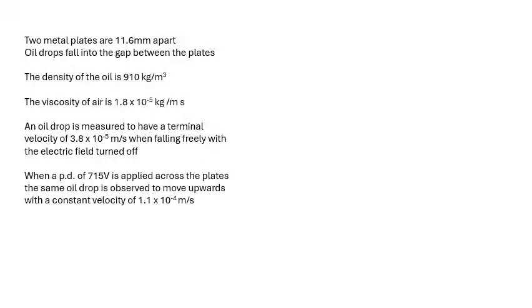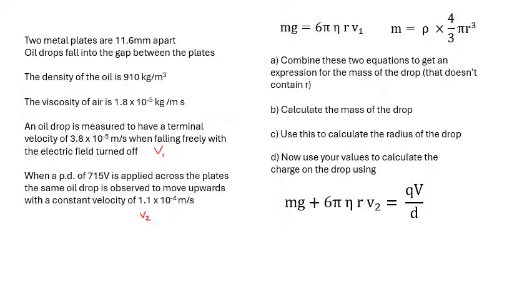The oil drop, so first of all, the oil drop is measured to have a terminal velocity of 3.8 × 10⁻⁵ meters per second when falling freely, so that is v1. Remember we call that little v1. Then when we turn on a pd of 715 volts, the oil drop moves upwards with this velocity, and that's v2, that's our moving upwards velocity with the field turned on. This is a big number crunching question.